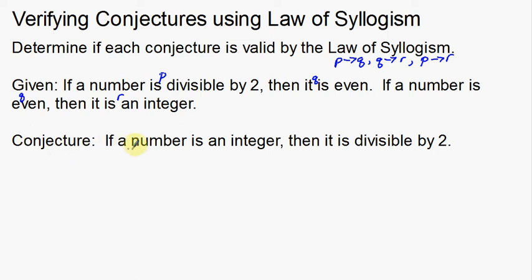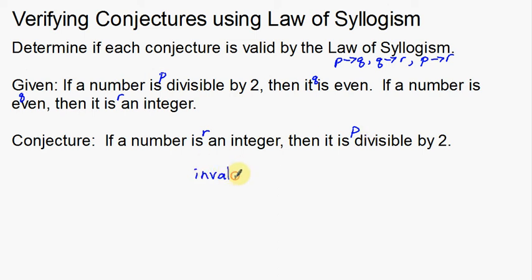Now the conjecture: if a number is an integer — which is R — then that number is divisible by two — which is P. Looking at our logical progression, we followed P then Q and Q then R for the first two, but then this last one says if R then P — it's backwards. Since that's backwards, we can already tell that it's going to be invalid.